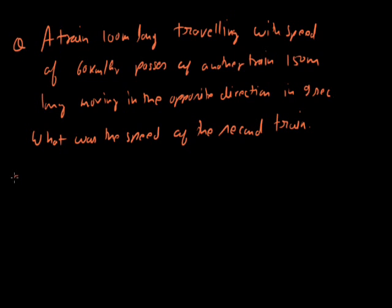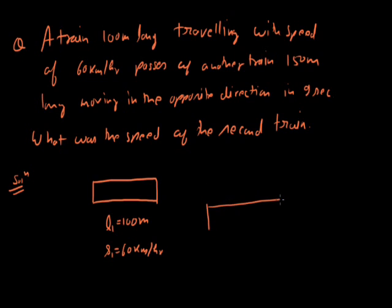Now let's see the solution. We have two trains. The first train, its length L1, let's say it is 100 metre. It is travelling with speed S1, that is 60 kilometer per hour. And we have another train, and it is L2, that is 150 meter, moving in the opposite direction.